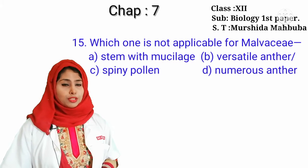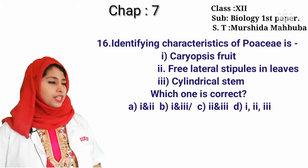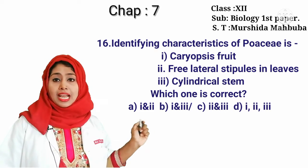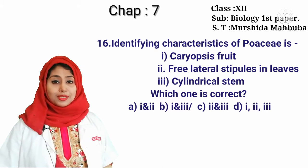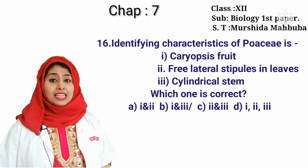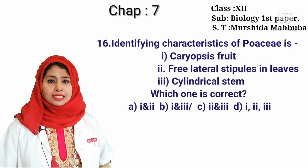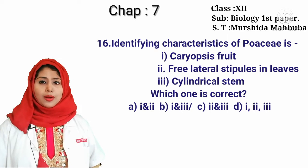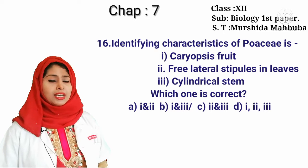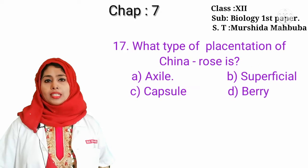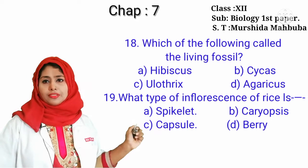You have to memorize the characteristics of Poaceae family, Malvaceae family, and their economic importance, then you can answer those questions. The identifying characters of Poaceae are caryopsis fruit, free lateral stipules in leaves, and cylindrical stem. The correct answer is 1 and 3 — caryopsis fruit and cylindrical stem. The type of placentation in china rose is axile.